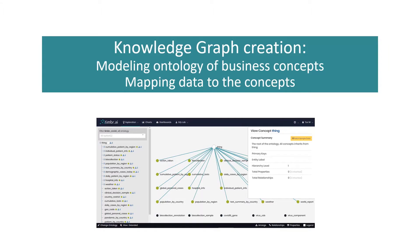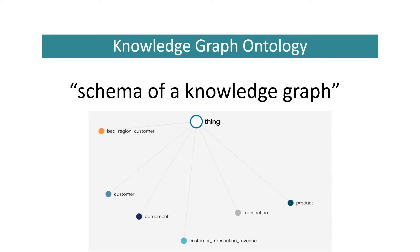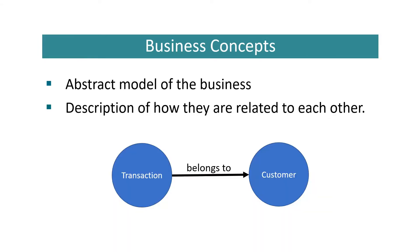We'll begin with the knowledge graph creation. Here is a look at an expanded version of the ontology we will be working with today. The ontology acts as the schema of the knowledge graph. It can also be viewed as an abstract model of the business where existing business concepts are represented as concept nodes on a graph, where connecting lines represent a relationship.